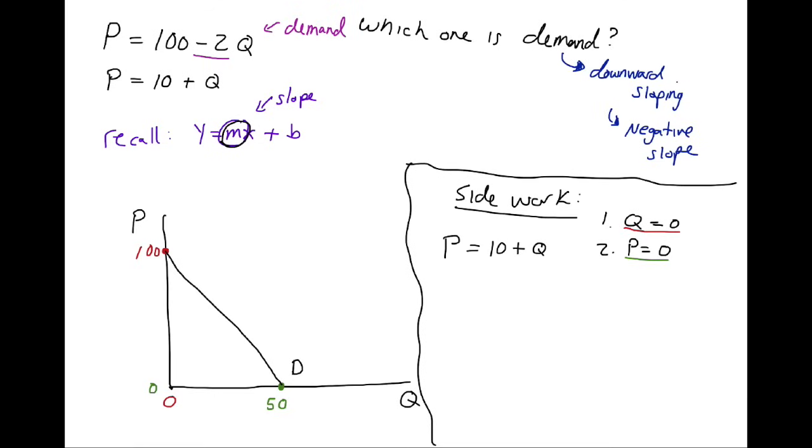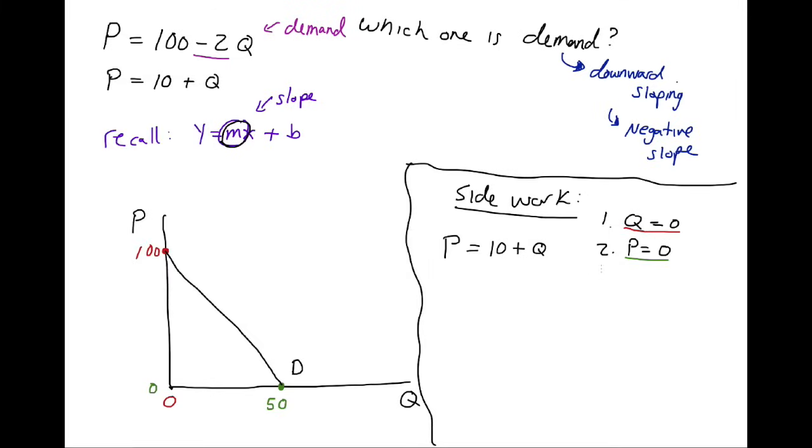And so again, we're going to use red to try and figure out when Q equals 0. That's usually the easier one. P equals 10 plus Q equals 0. And so P is just going to simply equal 10. And we know when Q equals 0, it's going to be right here.